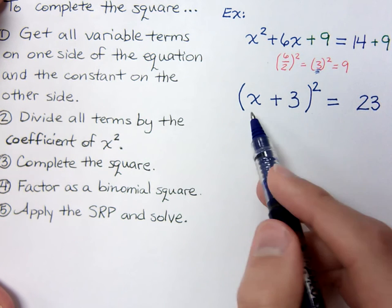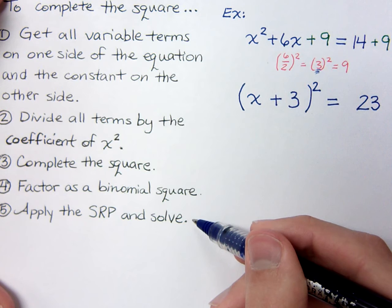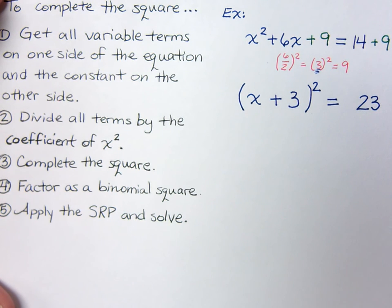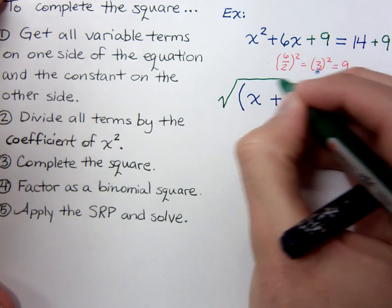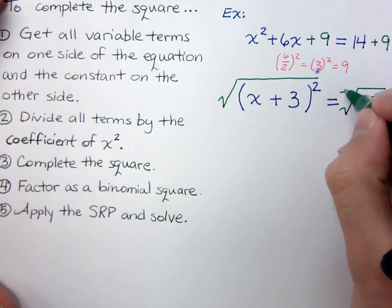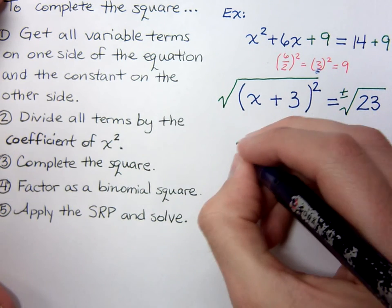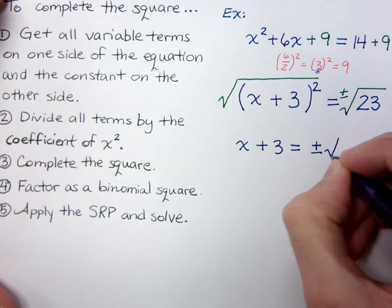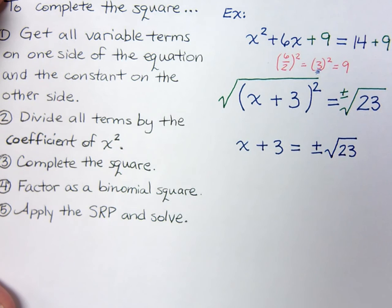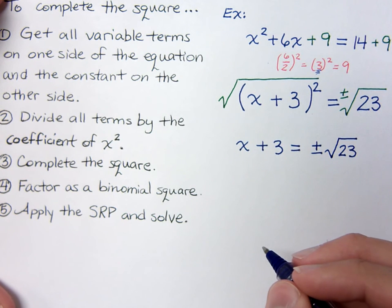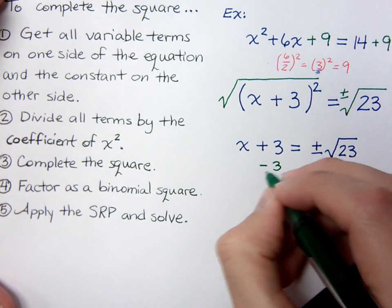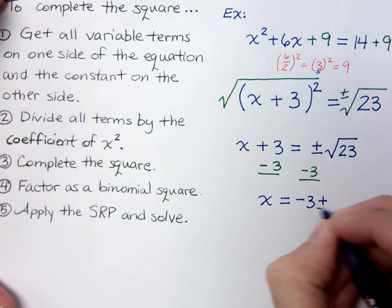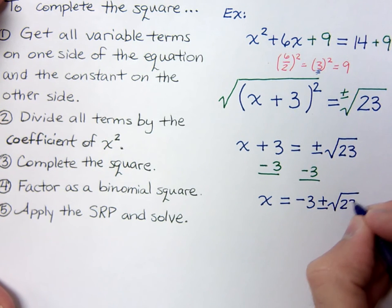Once we've gotten it into this stage and factored it as a binomial square, it's pretty simple. You just apply the square root property. Take the square root of both sides — remember the plus or minus, I can't forget that. So x plus three equals plus or minus the square root of twenty-three, which cannot simplify. Then we finish getting x by itself by subtracting the three over.